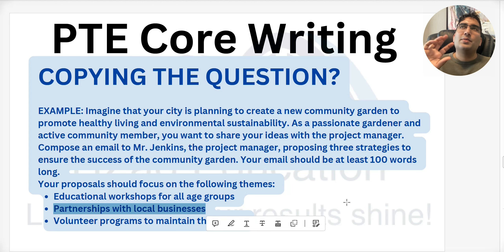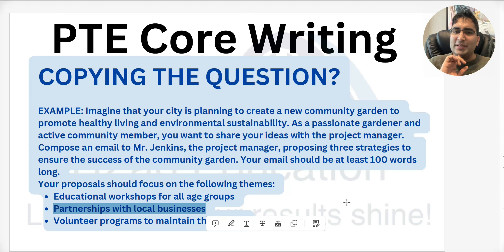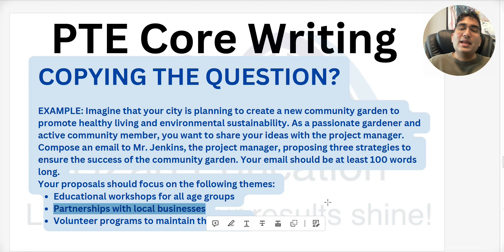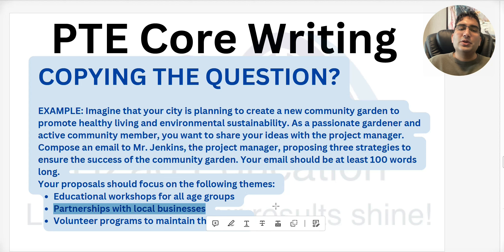For example, if the bullet point says 'partnerships with local businesses,' and in your paragraph you describe how we can talk to different people, find common ground, expand economic powers, and create monopolies — using words like 'together' instead of 'collaborate' — the AI might not recognize you're addressing that bullet point. But if you write 'we should partner with local businesses' word-for-word, there's a risk of copy-pasting. The AI is not very sophisticated, so it may not connect very distant synonyms.